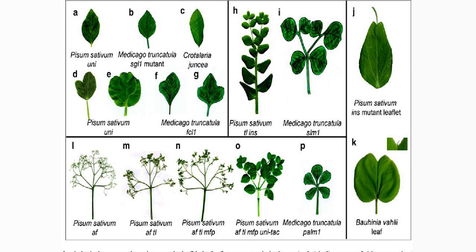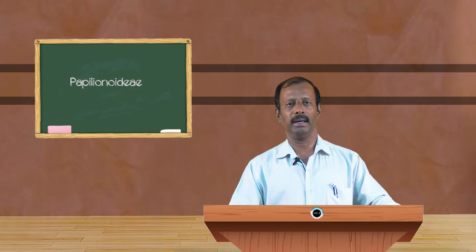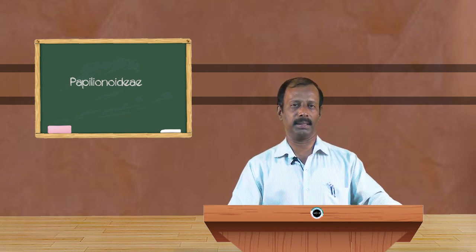An elongated petiole is present, and at the tip of the petiole, the leaflets are found. The leaflets are very peculiar and possess an entire margin, acuminate apex, and reticulate venation. The leaves are bright green in color and help in the process of photosynthesis.